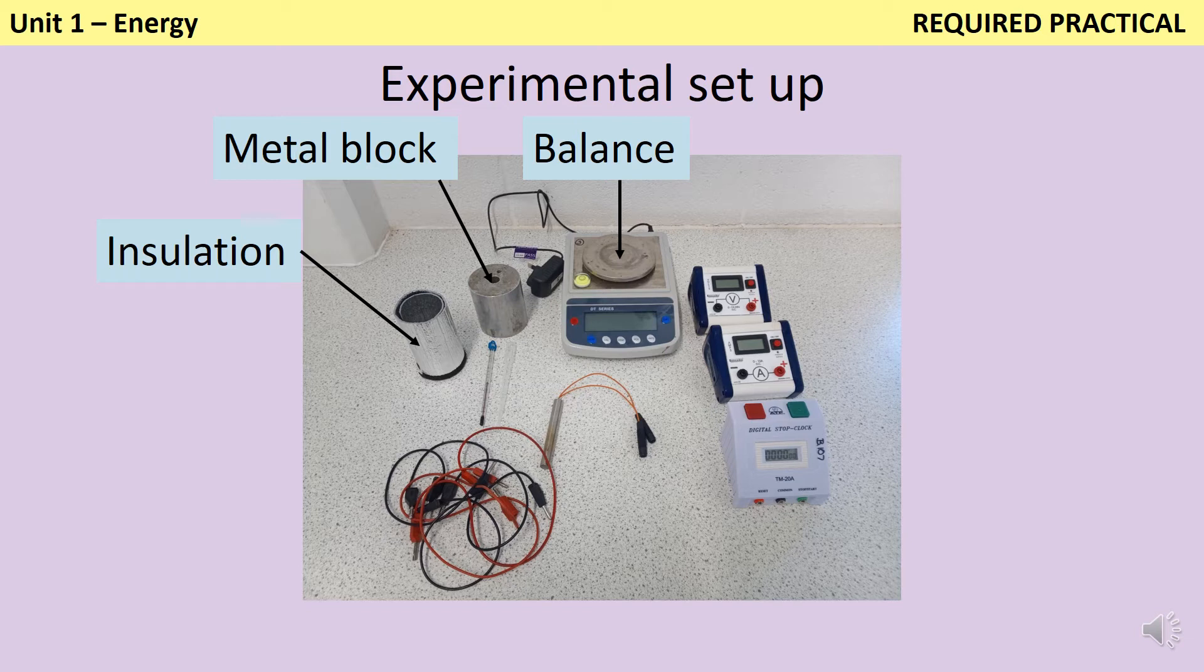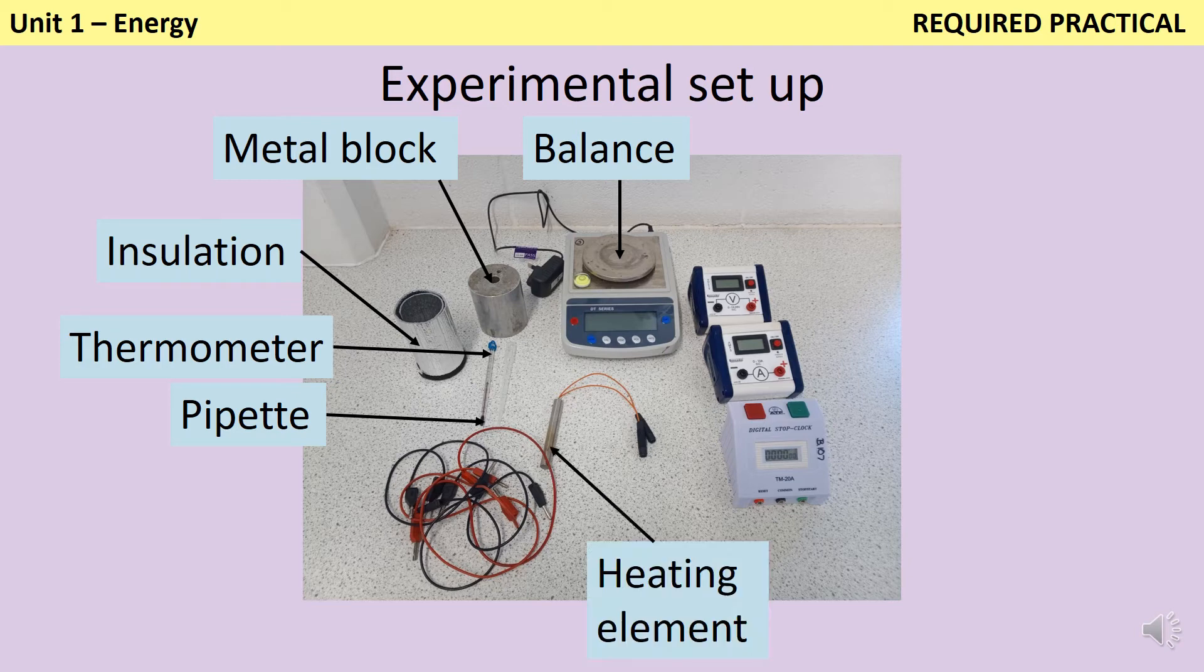Of course, I need to be able to calculate what that temperature change is, so I have a thermometer. Going with that, I have a pipette. The reason I have the pipette is that if I don't include a small amount of water in the gap, then because my thermometer doesn't fit perfectly into that hole, I'm going to have an air barrier between it and the metal, so I won't get an accurate temperature reading. Next, I need a way of actually heating up my substance, so here I have a little immersion heating element. And then on the right hand side, I have three pieces of equipment: a voltmeter, an ammeter and a stop clock.